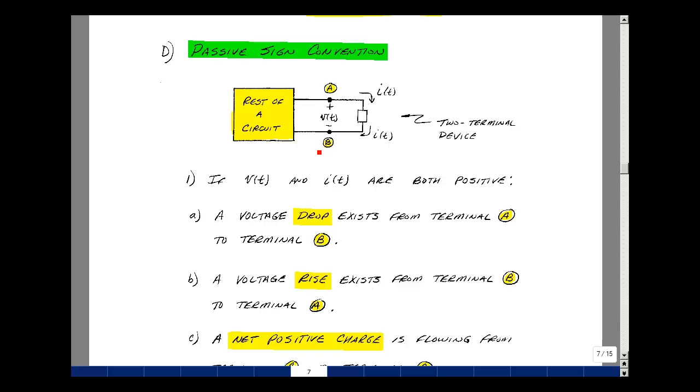Now suppose that V of T and I of T are both positive. Then we have some terminology that we can refer to in this configuration. We see that there's a voltage drop from terminals A to B, and there's a voltage rise from terminal B to terminal A.